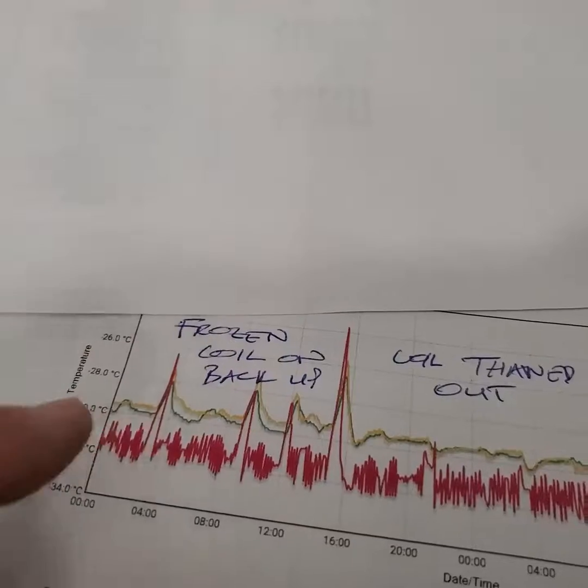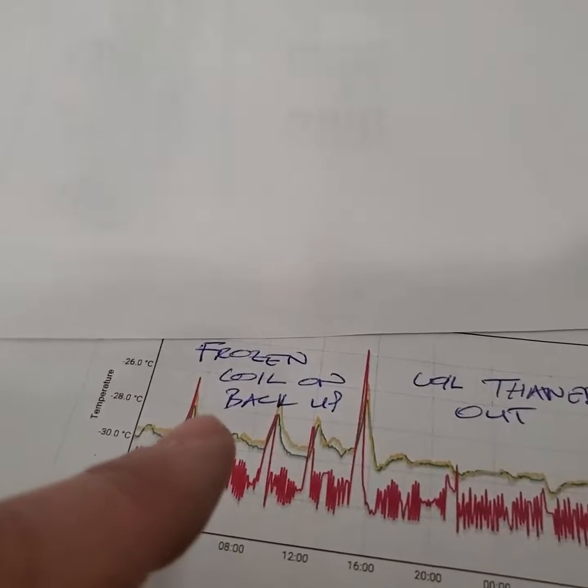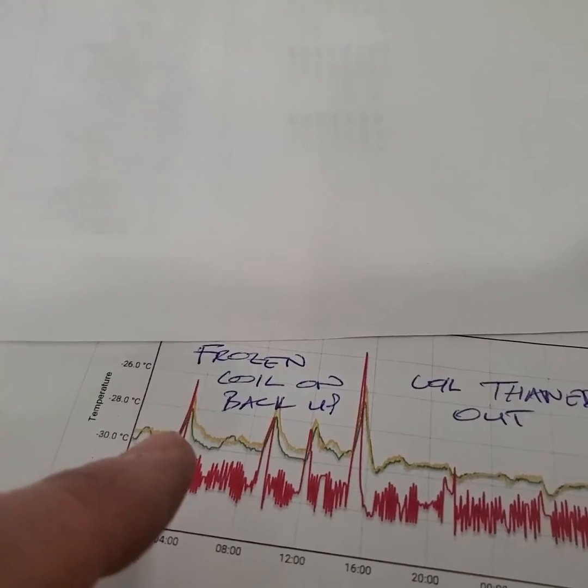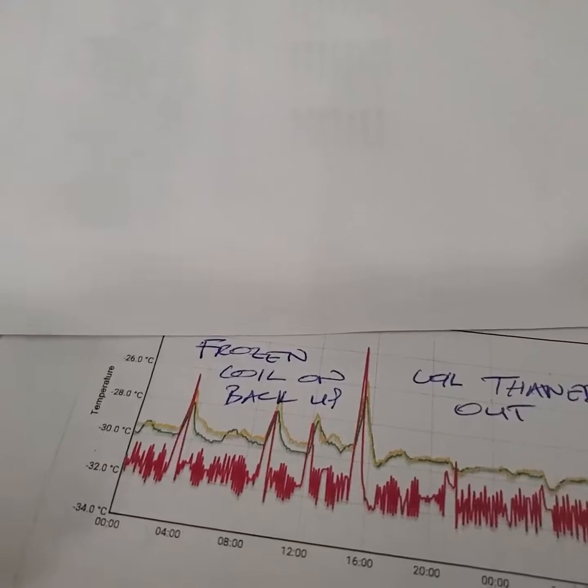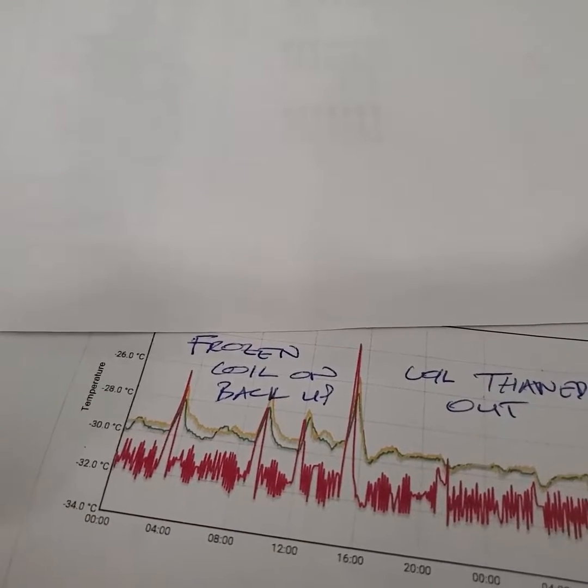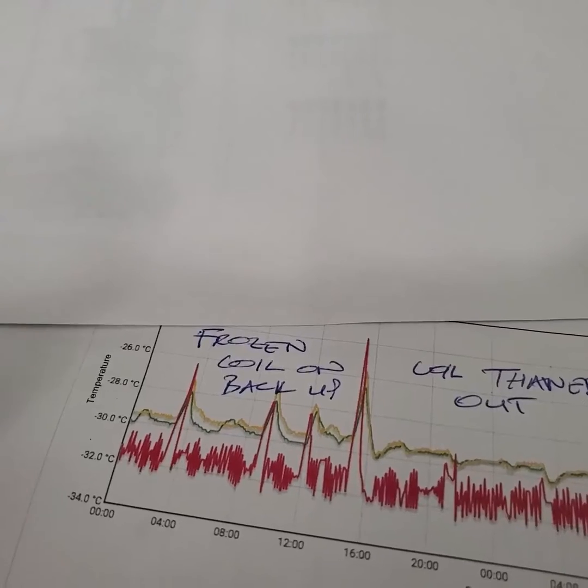This is the whole entire box. What happens is when the primary unit goes into defrost, the backup is supposed to hold the temperature of the box. Now it couldn't because the coil was frozen up and we couldn't defrost that coil.